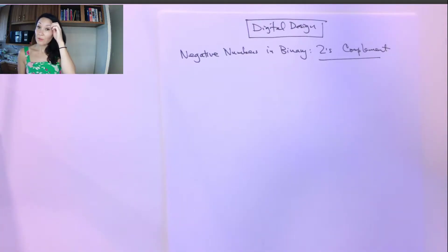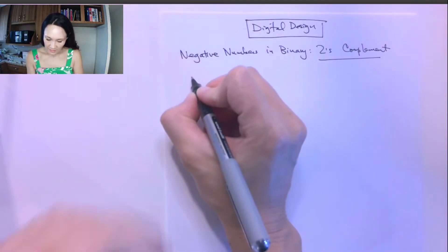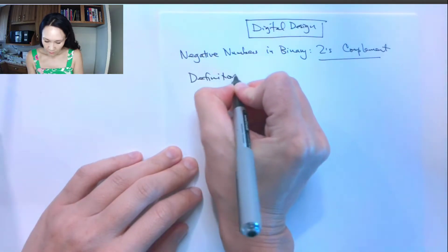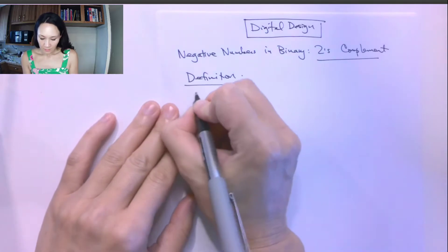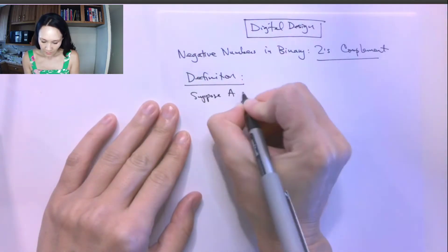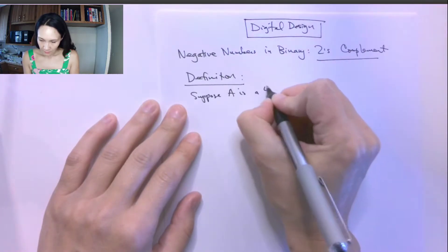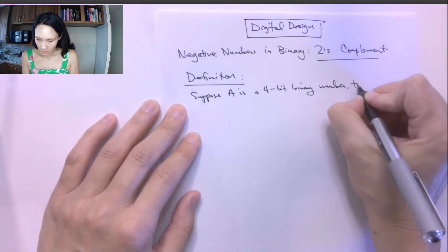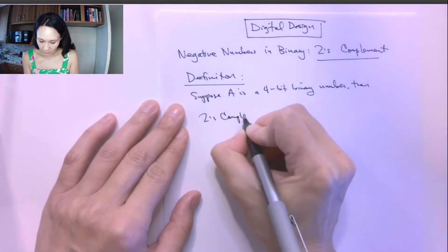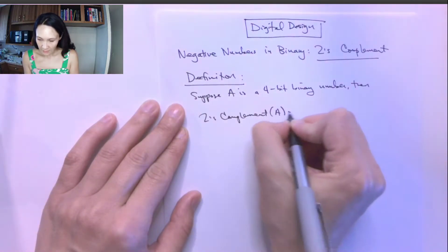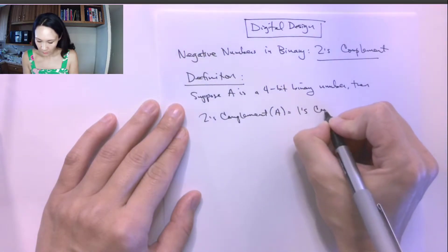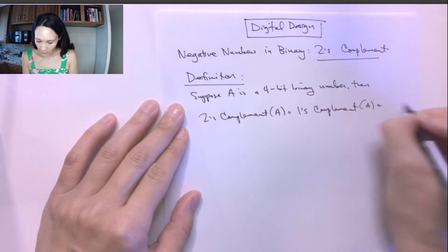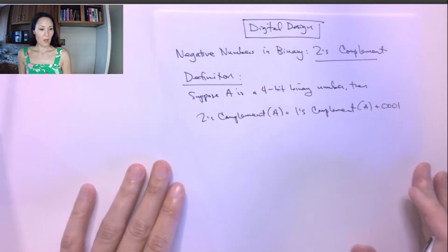Two's complement is the third, final, and most commonly used convention for representing negative numbers in binary that we're going to talk about in this class. Let me show you the definition of two's complement. So it works like this.